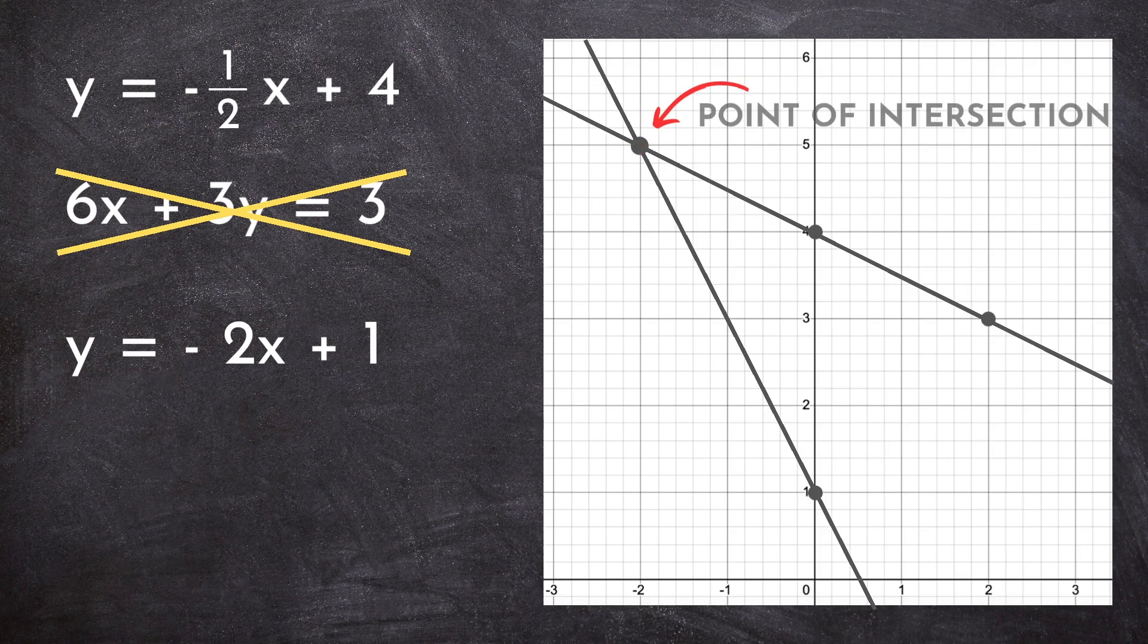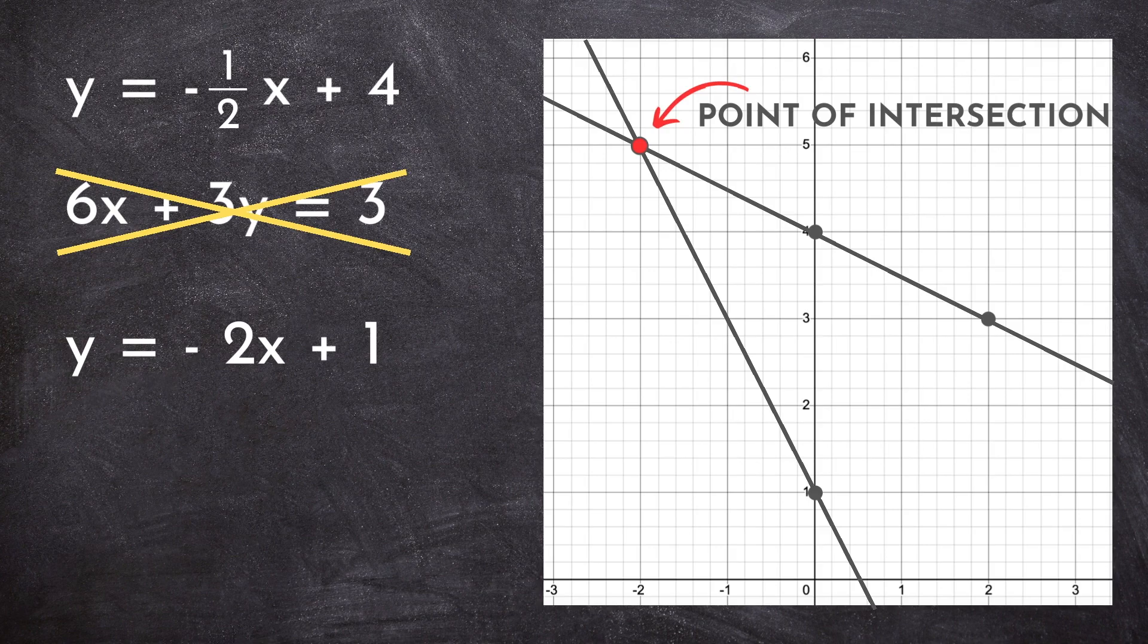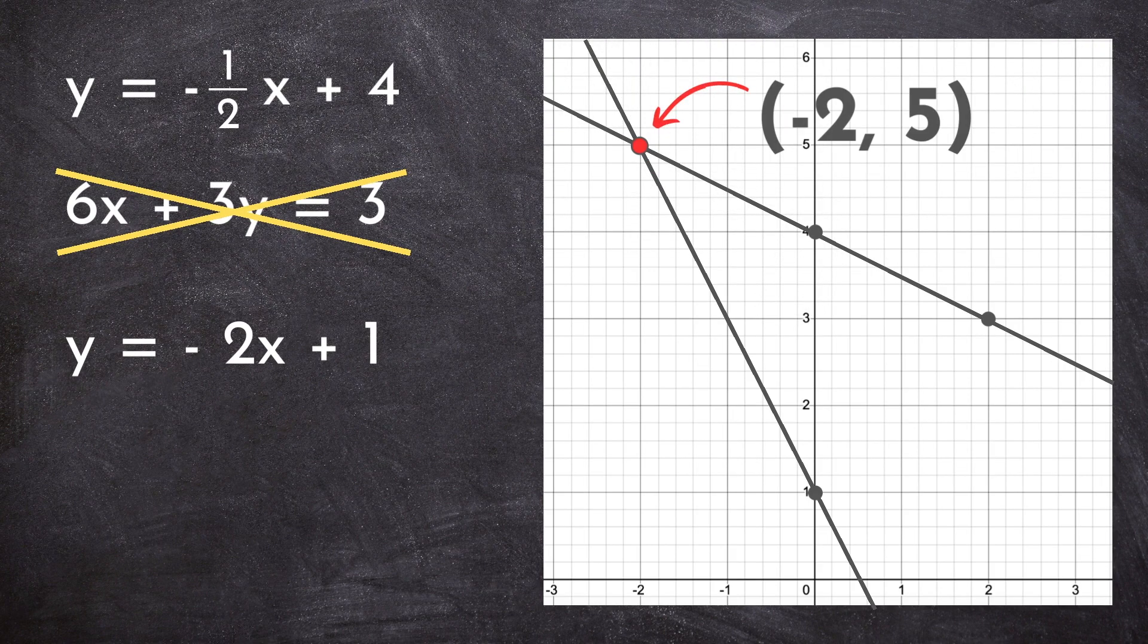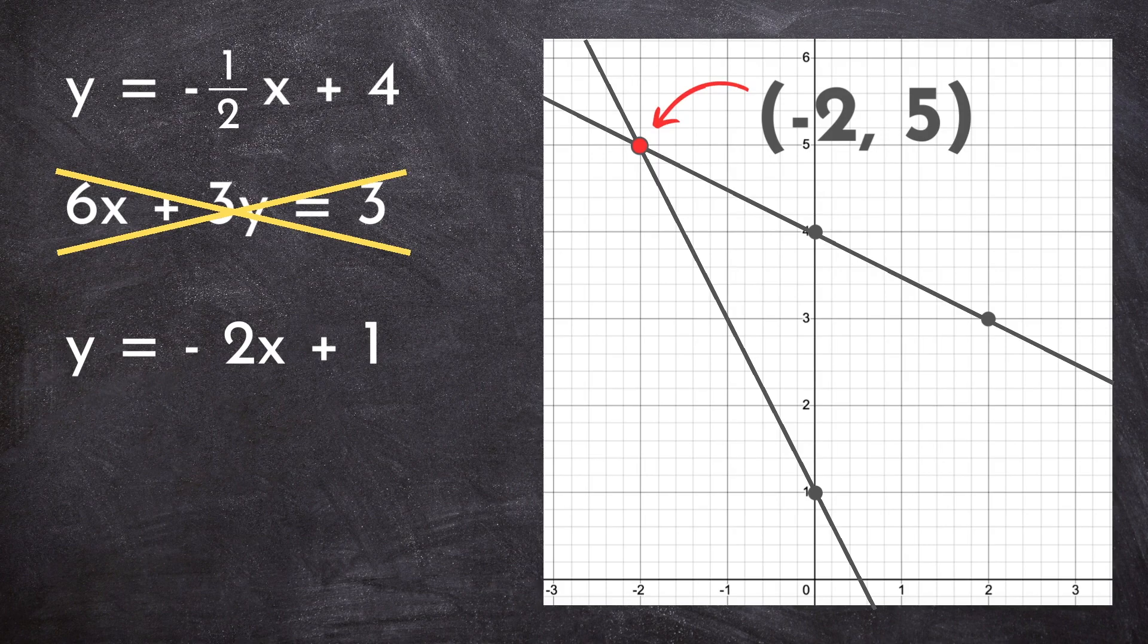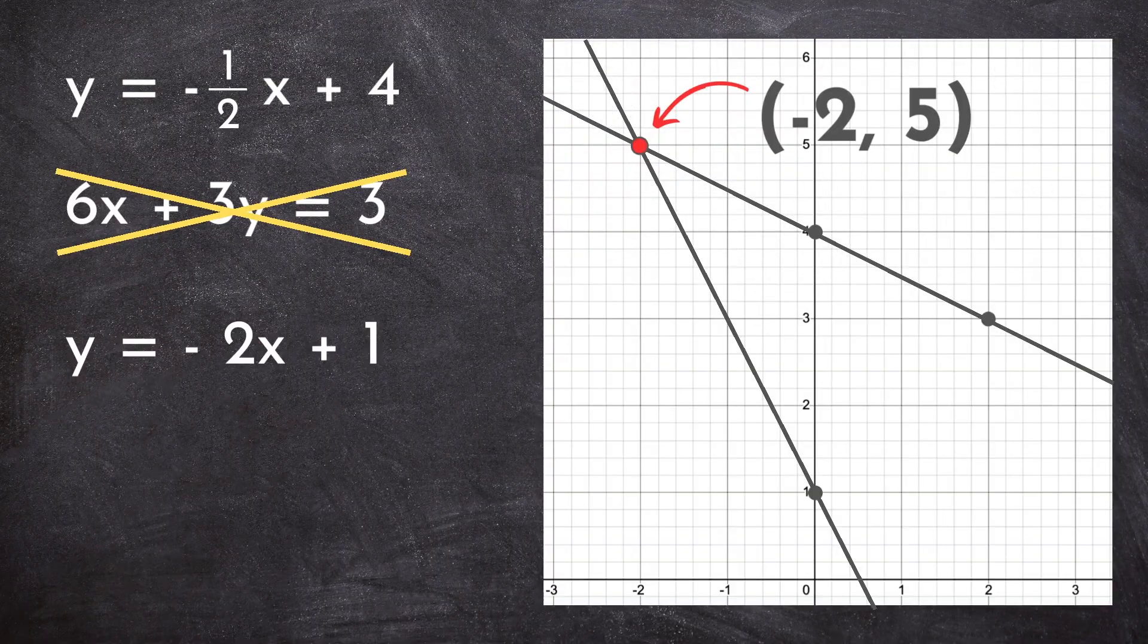What we have here is a point of intersection, or the point that happens to fall on both lines. In this case, the point is (-2, 5). And you can see that each line does in fact pass through this point. So the solution to this linear system is x = -2, y = 5, or the point (-2, 5).